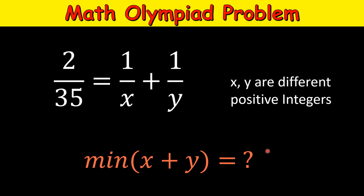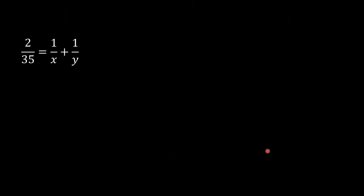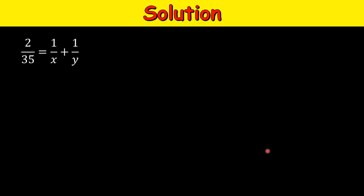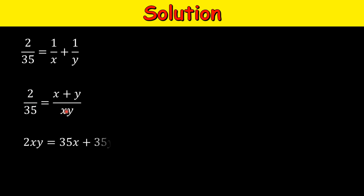Please pause the video, work out this equation, and let's see if you can get a better minimum than the one provided in this video. Now let's see the solution. This is our original equation. We simplify it a little: take the LCM on the right-hand side, which is xy, and the numerator becomes x plus y. Then we do cross multiplication to get 2xy equals 35x plus 35y.